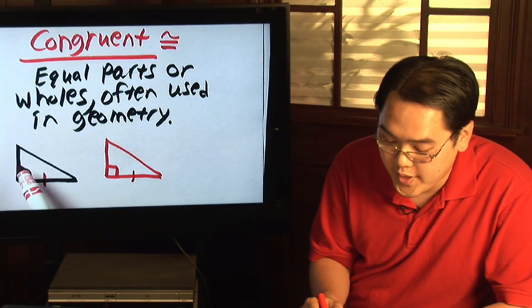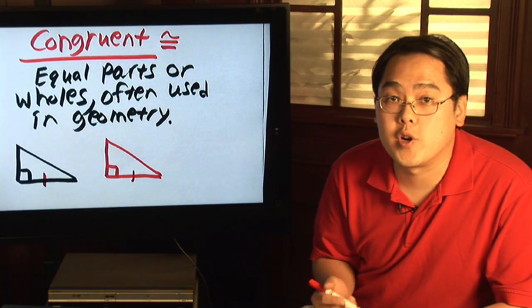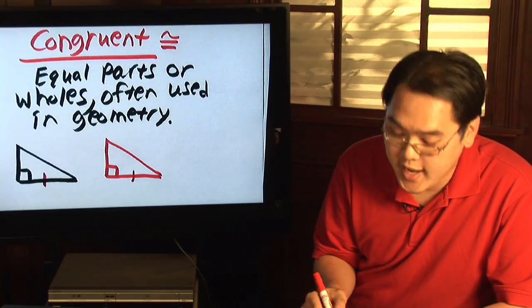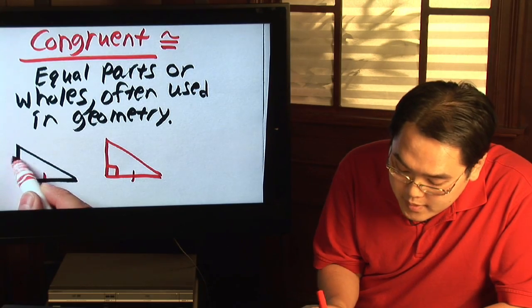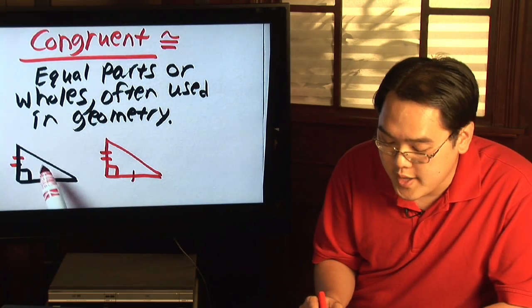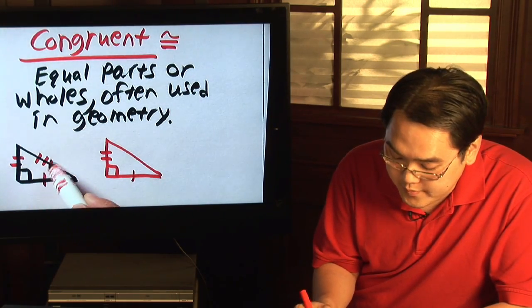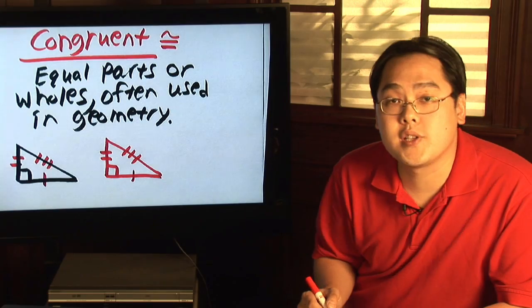Now if you wanted to show that this side is equal to this side, then you have a second pair of corresponding sides that are congruent, and you indicate the second pair by double slashes. And then if you want to show that the hypotenuses are equal, then you represent three slashes.